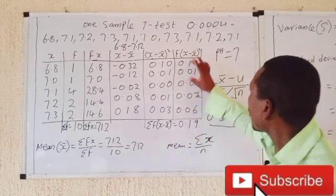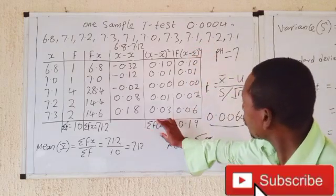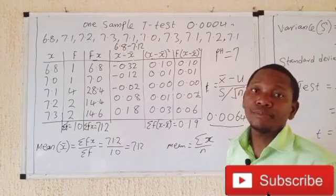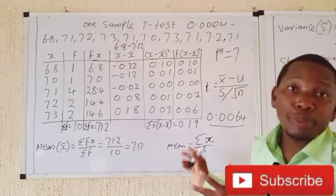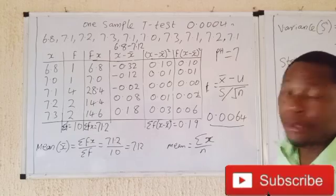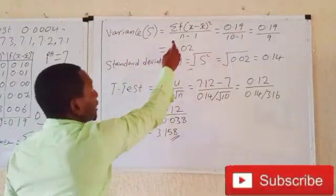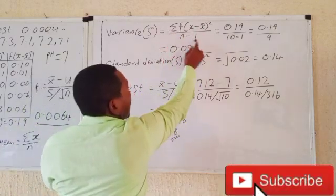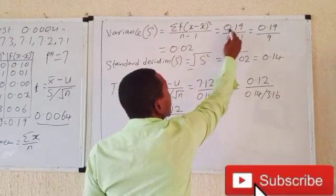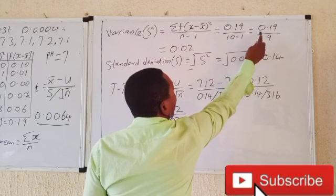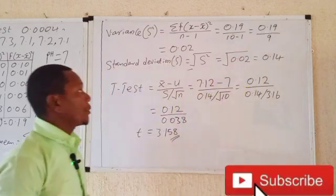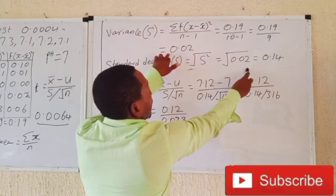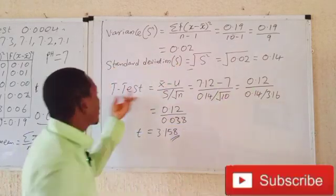Sum all the f·(x − x̄)² values to get 0.19. Now calculate the variance: variance = sum of f·(x − x̄)² divided by (n − 1) = 0.19 / 9. That is your variance. The standard deviation is the square root of the variance, which is the square root of 0.02. That is your standard deviation.